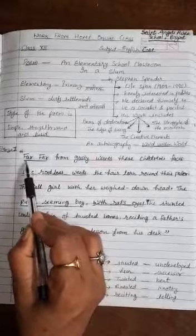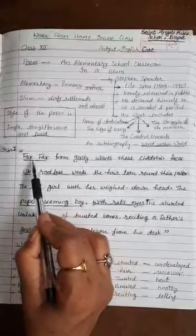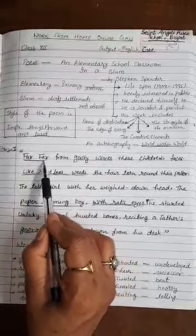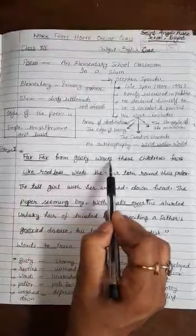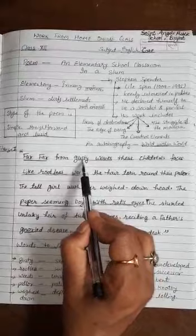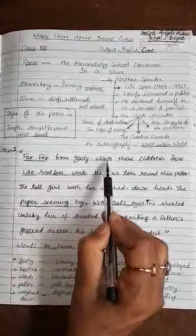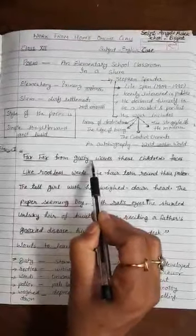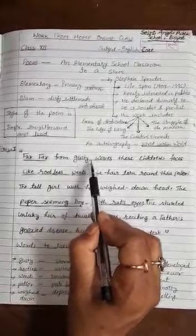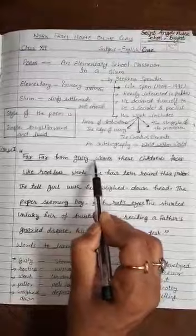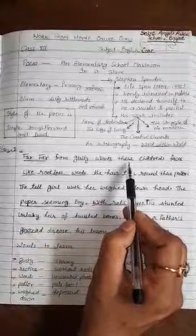Come to the first line again. Here we find far, far. Far is written two times. It means poet wants to emphasize the situation of these slum children, so he has used here repetition, the poetic device. From gusty waves, the image gusty waves shows that these children are far away from the luxurious settlement of city dwellers. They are unable to fulfill their basic amenities.